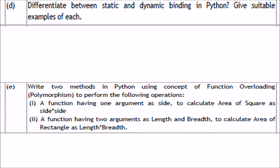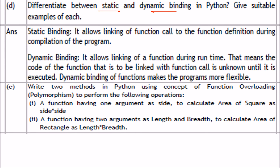Differentiate between static and dynamic binding in Python with suitable examples. Static binding means the function call is linked to the function definition at compilation time. Dynamic binding means the function call is linked to the function definition at run time — the code of the function to be called is unknown until it is actually executed. Dynamic binding makes programs more flexible.